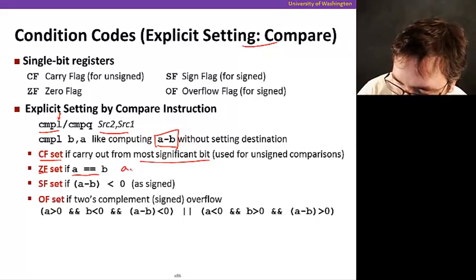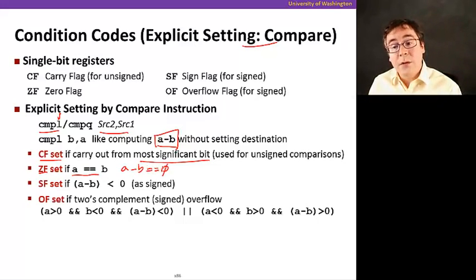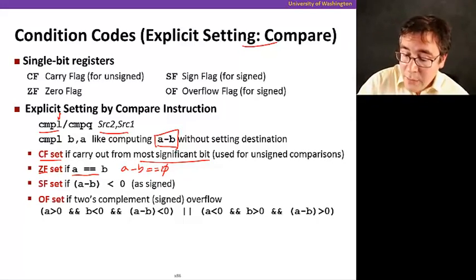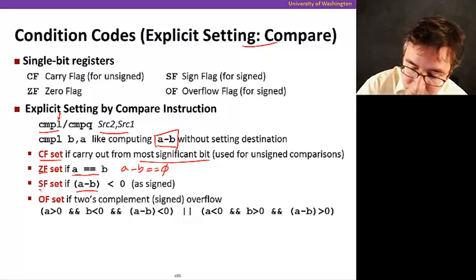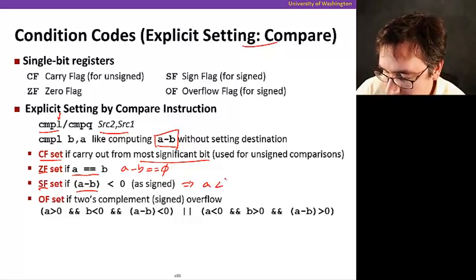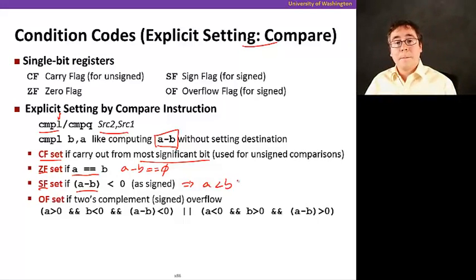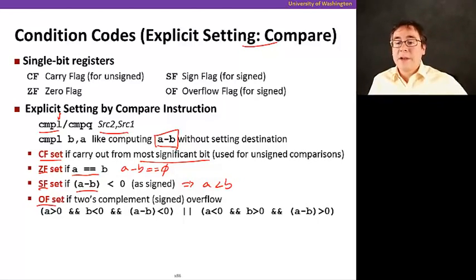Why is that? Because if A minus B equals zero, it means that A equals B, so the ZF is going to be set. This is useful for an equality comparison. Now, if A minus B is negative, we're going to set the sign flag. You know that this also means that A is less than B. And also, the overflow is set if there's a two's complement signed overflow.